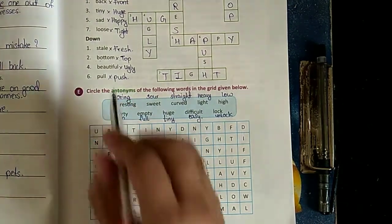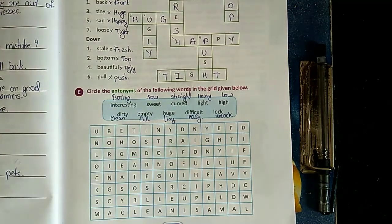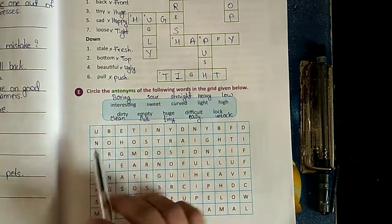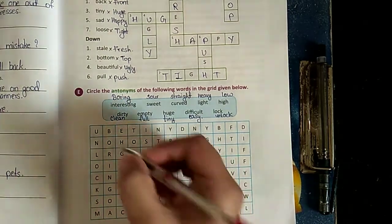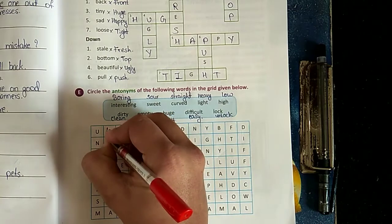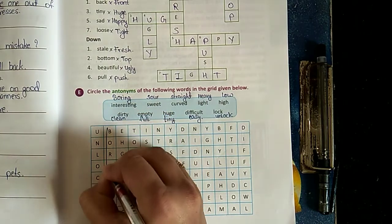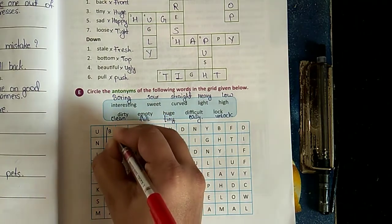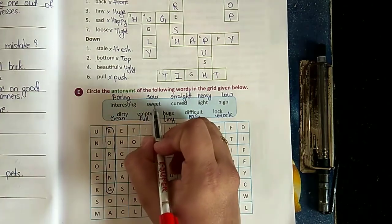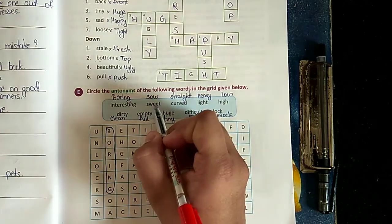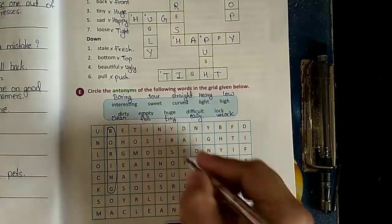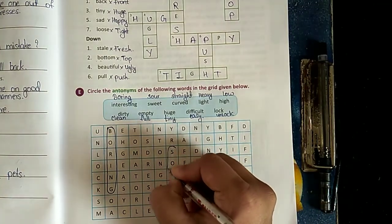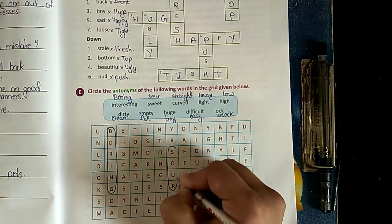Interesting - we have to find the opposites here in the box. Interesting - boring. Where is boring? It is here: B-O-R-I-N-G, boring. Second: sweet-sour. What is the opposite of sweet? Sour. Here it is, sour: S-O-U-R.